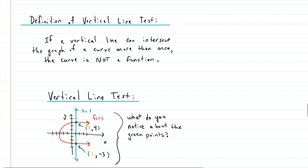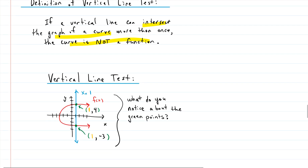Finally, let's talk about the vertical line test. You may have used the vertical line test over and over in your algebra work but not really understood why. The definition: if a vertical line intersects the graph of a curve more than once, then the curve is not a function. Looking at this example, I can place a vertical line anywhere and all those vertical lines touch the red curve more than once — so this curve is obviously not a function.